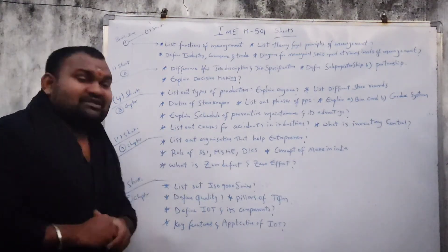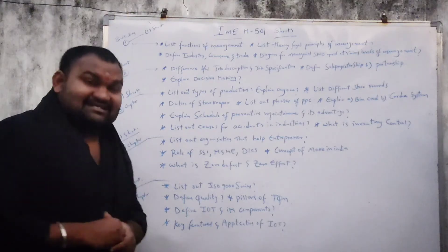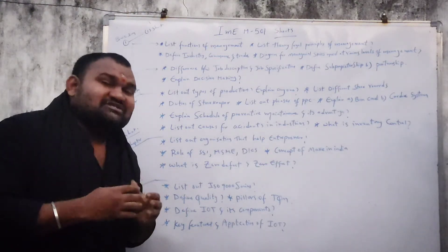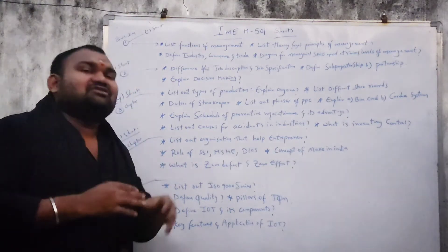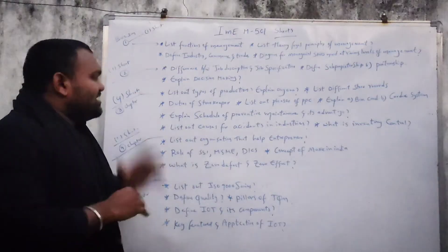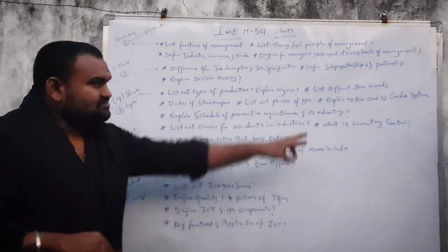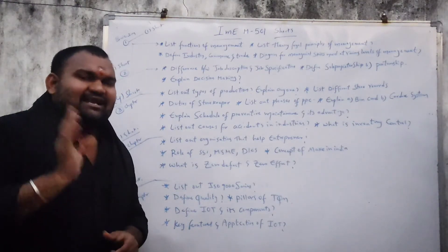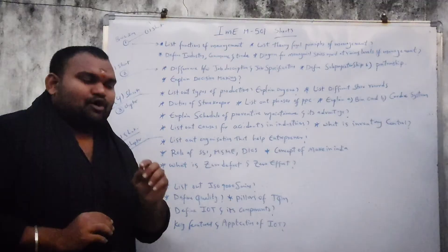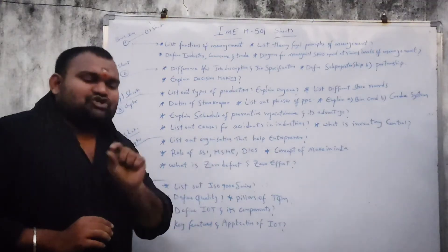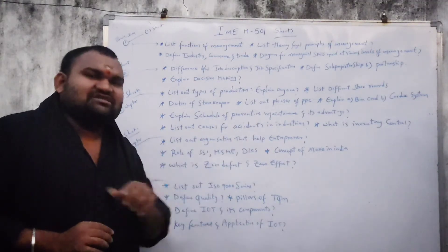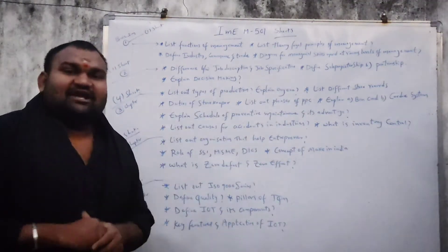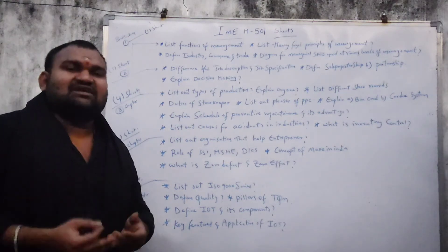Next, list out the causes of accidents in industries — how accidents happen in industry and the results of accidents. What is inventory control? Inventory means material — if you have a product, you have different materials. Inventory control — there is a definition for that.